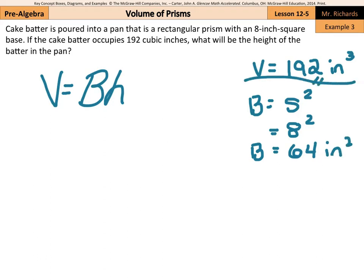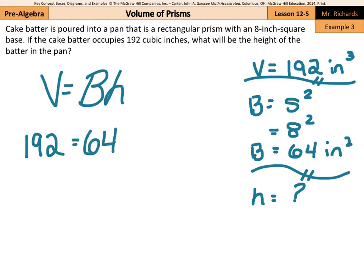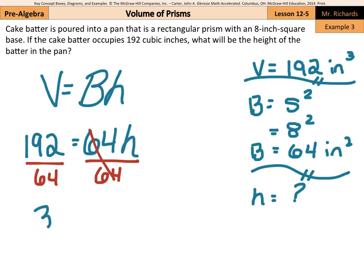So we have the volume of 192 inches cubed. We have the area of the base being 64 inches squared. And we're actually looking for the height. So now we can substitute in 192 for our volume, and 64 for the area of the base. So if we divide by 64 on both sides, the 64s cancel out, and 192 divided by 64 gets me an answer of 3 inches for that height.